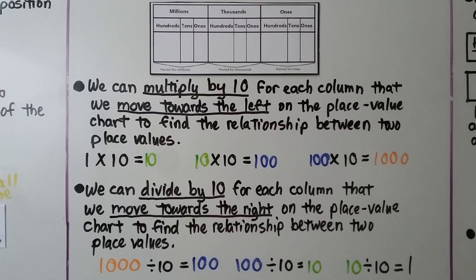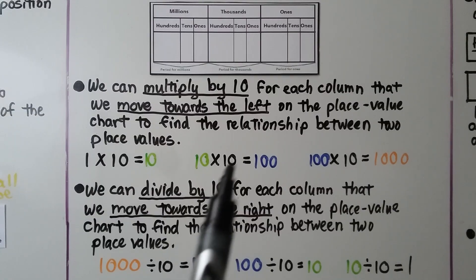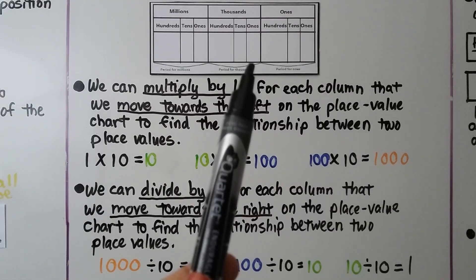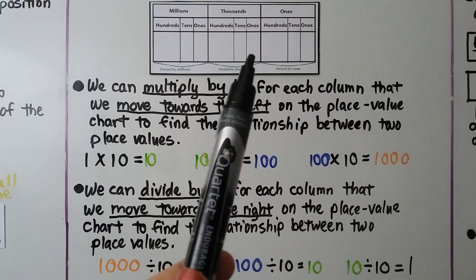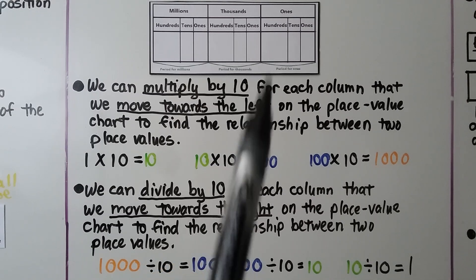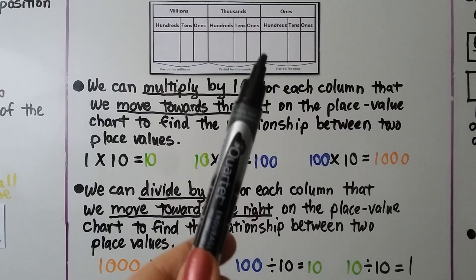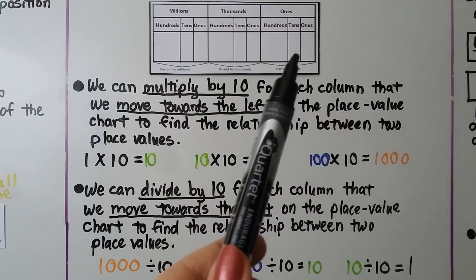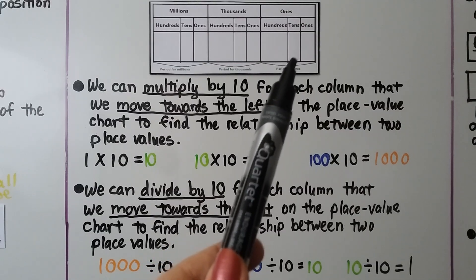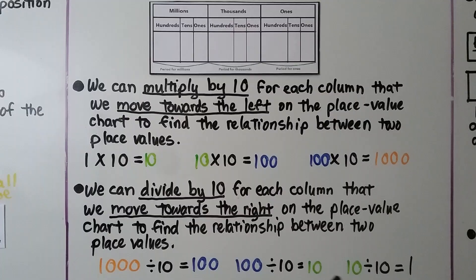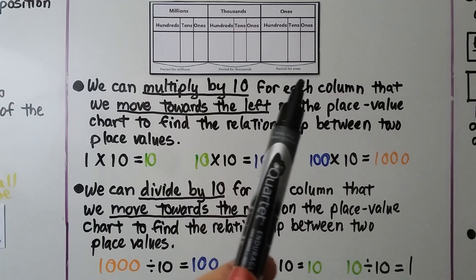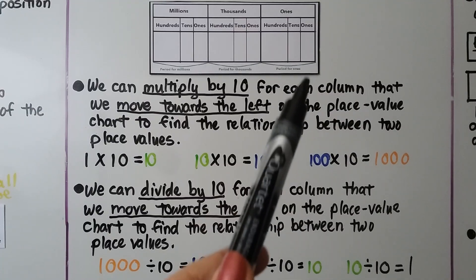We can divide by 10 for each place value we move toward the right on the place value chart. So if we're at 1,000 and divide by 10, we'll be at 100. If we have 100 and divide it by 10, we move to the right and we'll have 10. And if we divide that 10 by 10, we'll have a 1.